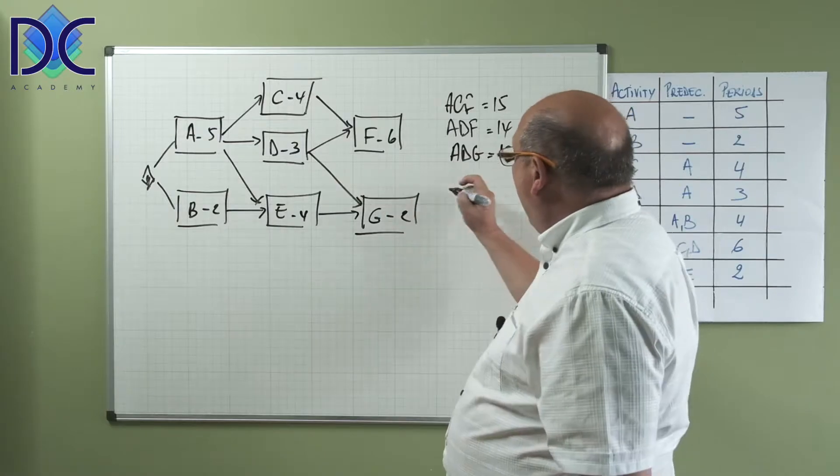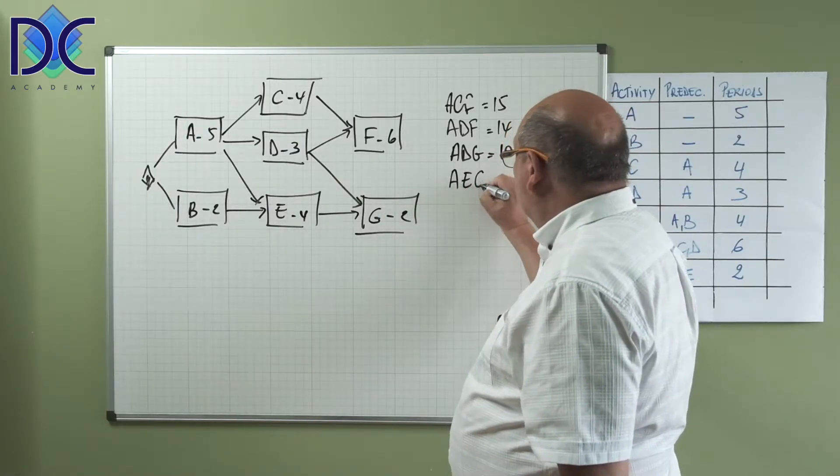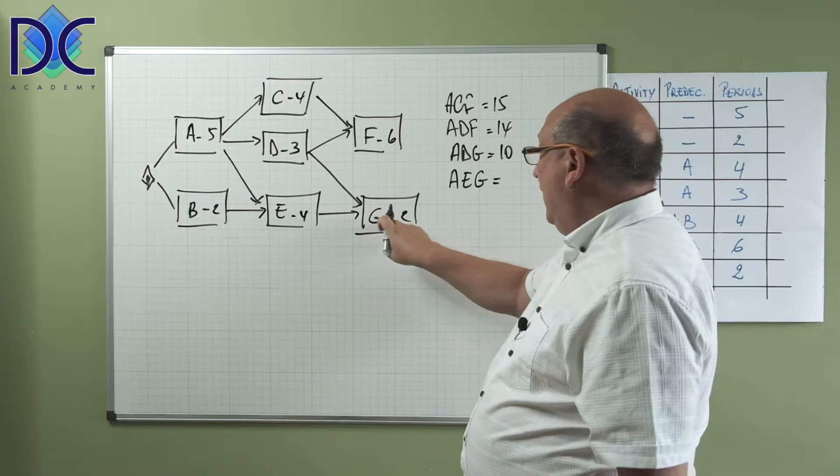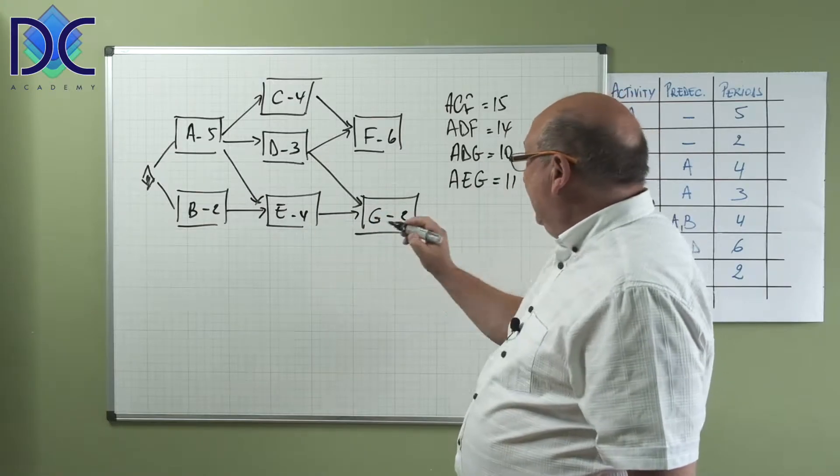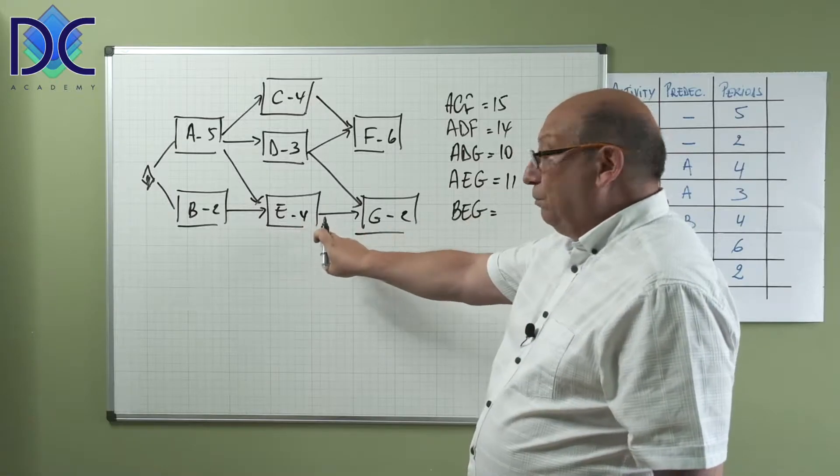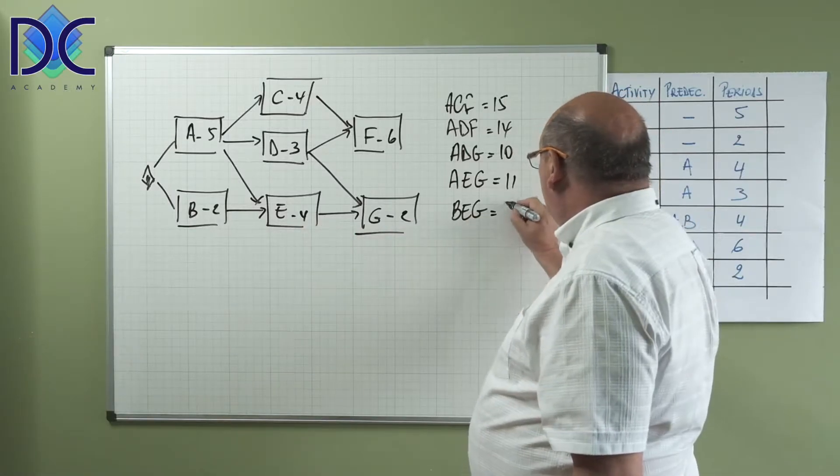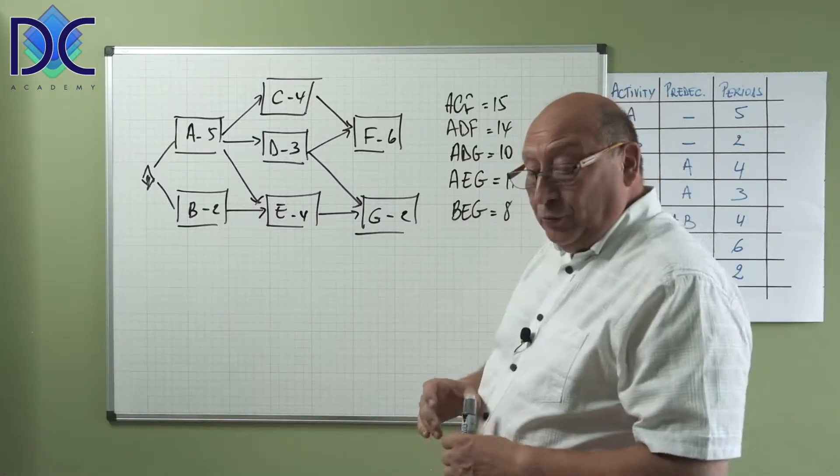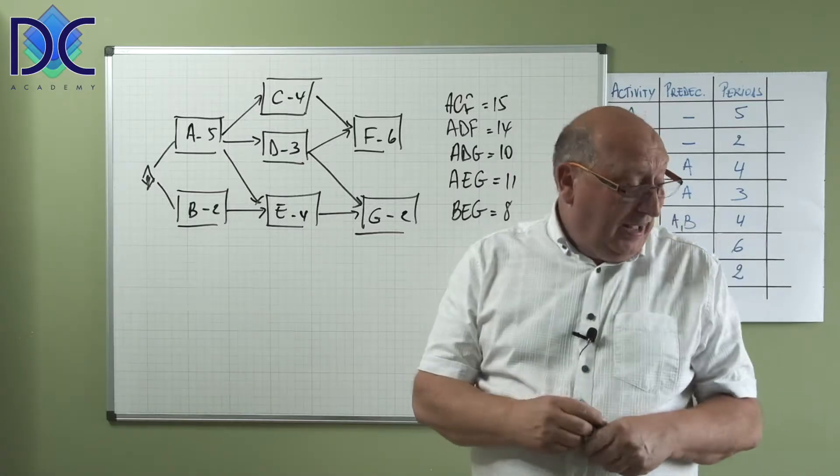Then we have AEG, 5 plus 4 is 9 plus 2 is 11, and then we have BEG which is 2 plus 4 plus 2 is 8. You see that we have now more paths through the network.